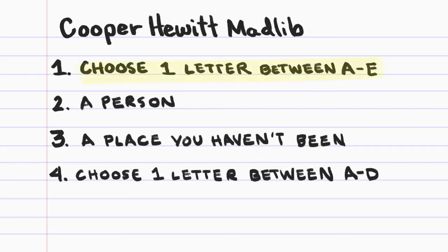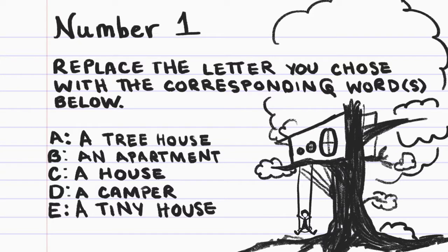Now that you've finished writing those out, go back to number one where you wrote a letter A through E. Next to number one, replace the letter with the corresponding word that you see on the screen. For example, if you wrote down letter B, you would replace B next to number one with the words 'an apartment.' If you chose letter D, you would write down next to number one 'a camper.'